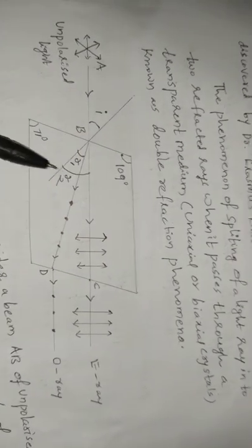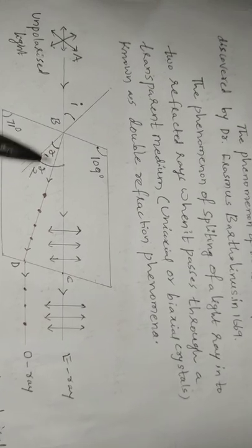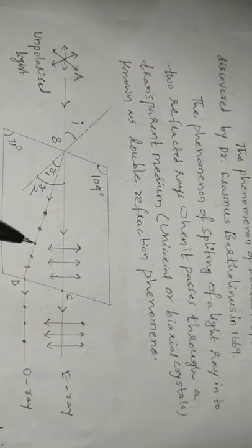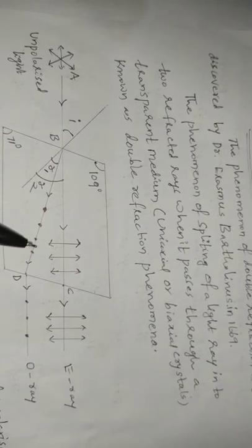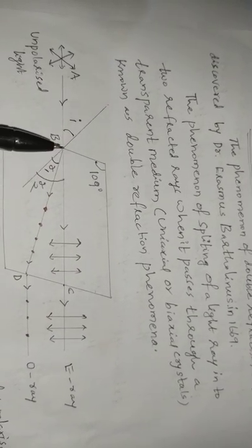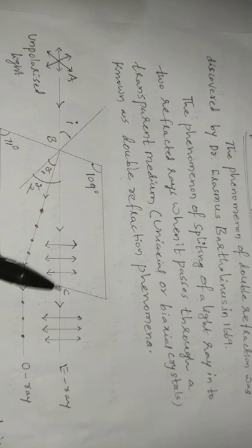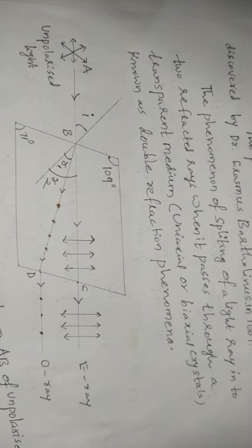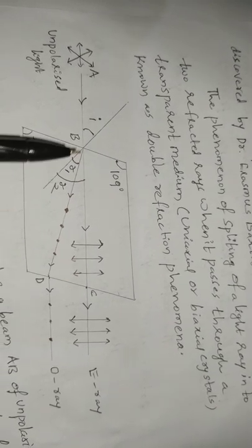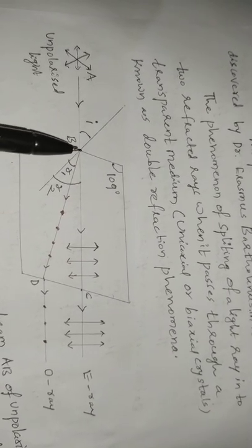One light ray obeys the laws of refraction and its vibrations are perpendicular to the principal section — this is known as the ordinary ray. The other ray does not obey the laws of refraction and its vibrations are parallel to the principal section of the calcite crystal — this is known as the extraordinary ray.